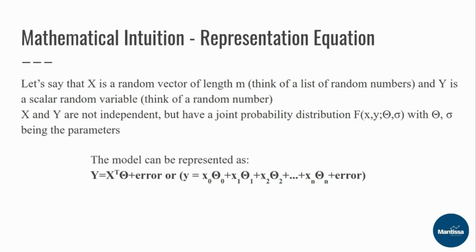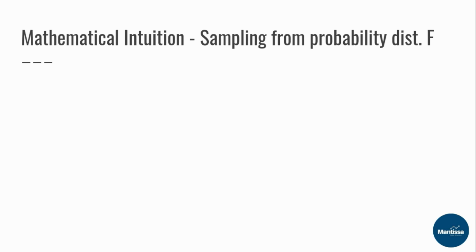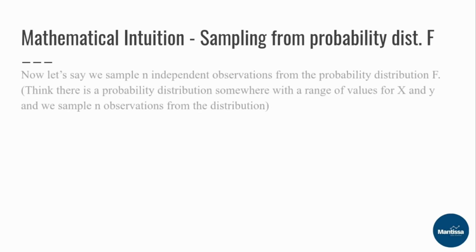This model, where x and y are not independent but have a relationship, can be represented as y = x-transpose times theta — where x-transpose indicates we are taking a product — plus some error term, or expanded as y = x₀θ₀ + x₁θ₁ + x₂θ₂ + so on. Our entire journey is to find theta, because we already have the values of x and y in our data set.